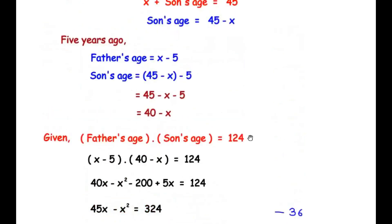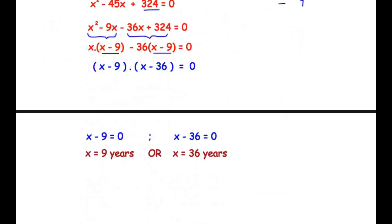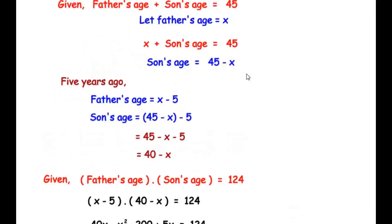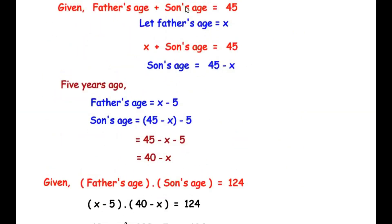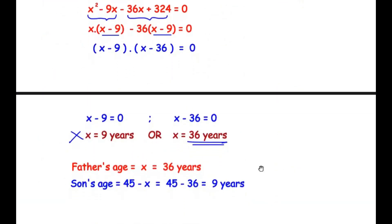Since we took x as the father's age, the father's age cannot be 9 years, so we discard that value and take x equal to 36 years. Using the expression for the son's age from the first statement, son's age equals 45 minus x equals 45 minus 36, which gives 9 years. Therefore, the father's present age is 36 years and the son's present age is 9 years.